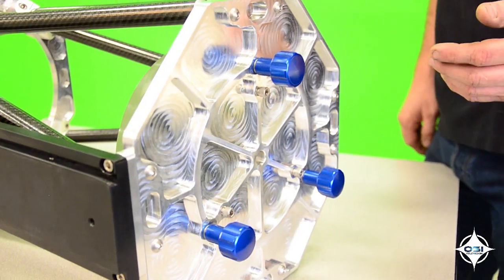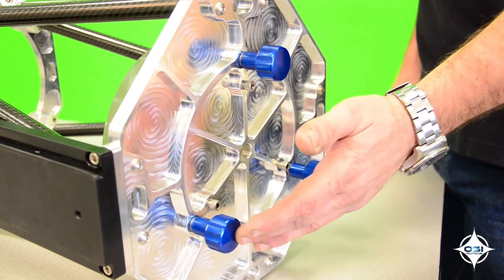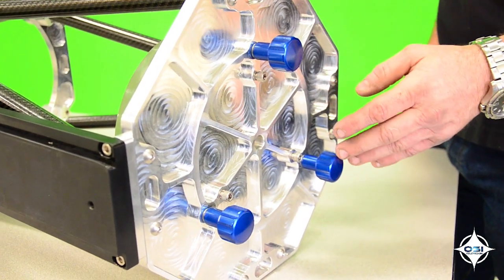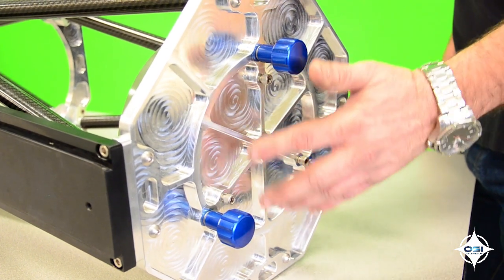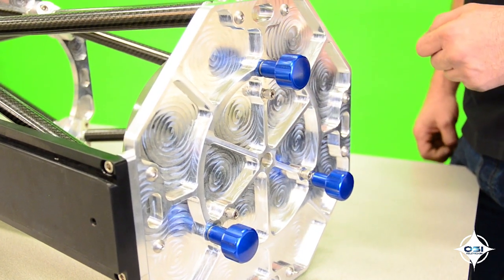Starting from the back, the collimation system has easy to adjust primary mirror collimation knobs and then these set screws here are actually to lock the system up once it's collimated so there's no shift in use.